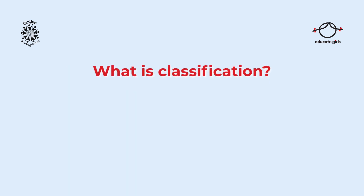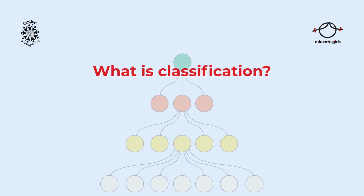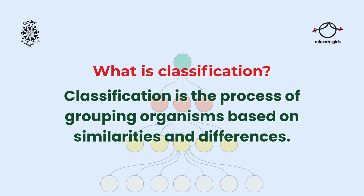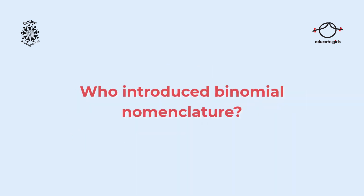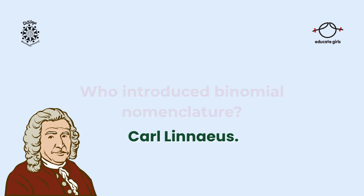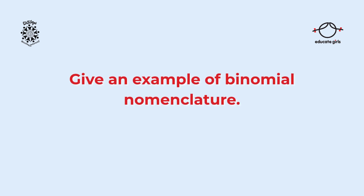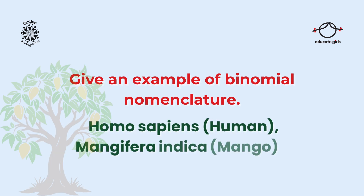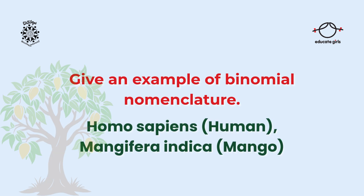What is classification? Classification is the process of grouping organisms based on similarities and differences. Who introduced binomial nomenclature? Carl Linnaeus. Give an example of binomial nomenclature: Homo sapiens (human), Mangifera indica (mango).